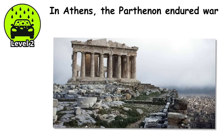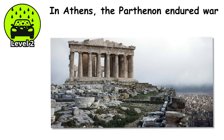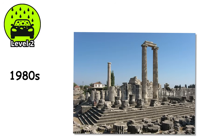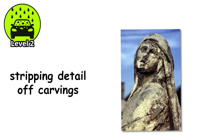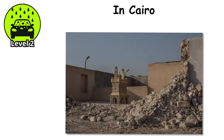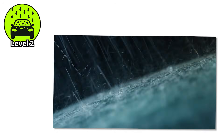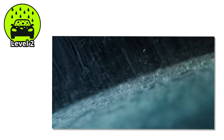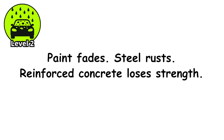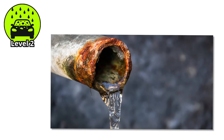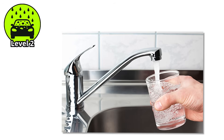In Athens, the Parthenon endured war, looting, and centuries of weather. But by the 1980s, the worst enemy was the air itself. Rainfall laced with sulfuric acid was dissolving the marble, stripping detail off carvings that had survived 2,000 years. In Cairo, the city's limestone tombs and ancient walls began to crumble — not from neglect, but from rain just acidic enough to act like vinegar on stone. Paint fades, steel rusts, reinforced concrete loses strength. In some older cities, acid rain also pulls lead from plumbing, sending it into drinking water.